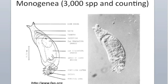Monogenians have high host specificity and high site specificity. In general, a given monogenian species infects one particular host species — all fish are not the same to these parasites. They also live on a very specific part of the fish. For example, on some fish species you can find one species of monogenian at the base of the gills and a completely different species at the tip of the gills, and they're never found in each other's locations.